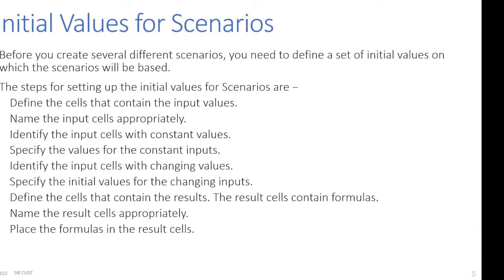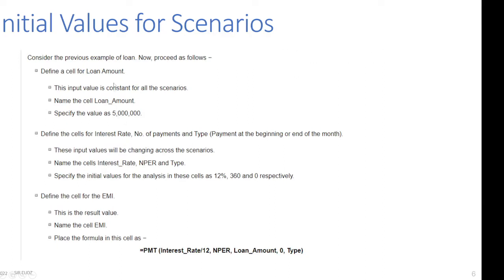Before you create several different scenarios, you need to define a set of initial values on which the scenarios will be based. The steps for setting up initial values are: define the cells that contain the input values; name the input cells appropriately; identify input cells with constant values; specify input cells with changing values; specify the initial values for the changing inputs; define the cells that contain the results — the result cell contains a formula; name the result cells appropriately; and place the formulas in the result cells.